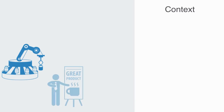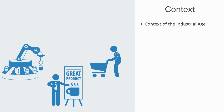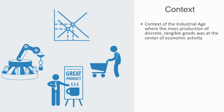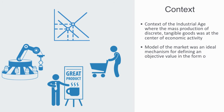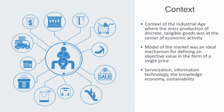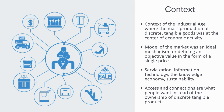Our standard theory of value was formalized within the context of the industrial age, where the mass production of discrete, tangible products was at the center of economic activity. These discrete products could be easily given a homogeneous, quantified price, and due to a lack of information, this model of the market was an ideal mechanism for defining objective value. Today, a number of factors are converging to put stress on this traditional paradigm: servicization, information technology, the knowledge economy, and sustainability. Information technology is making it ever more explicit that value is in the network of connections, and in an interconnected world, access and connections are what people want instead of the ownership of discrete, tangible products.